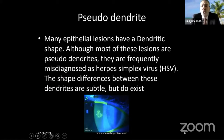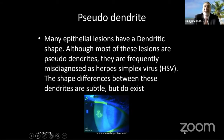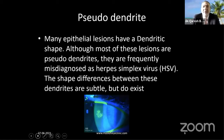Let's move on to pseudodendrites, having learned enough about true dendrites. Many epithelial lesions which are not HSV also have a dendritic shape. Although most of these lesions are called pseudodendrites, pseudodendrites is really a wastebasket diagnosis — we misdiagnose everything as HSV. There are shape differences between these dendrites — subtle but they do exist. Let's see if we can find out whether there is some clinical difference.